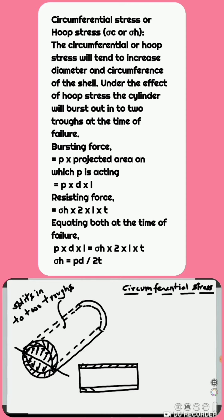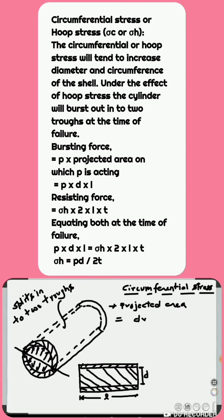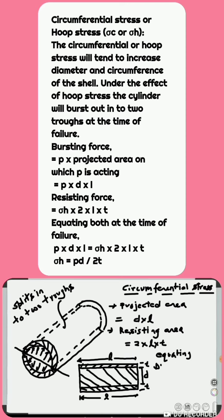Bursting force equals P into D into L, where the projected area of the trough is a rectangle of length L and breadth D. Resisting force equals hoop stress into the area of the resistance section: Sigma H into 2 times L into T, where the area of the resistance section is length L into thickness T, and 2 is multiplied for both sides of the resisting areas. Equating both forces at the time of failure: P into D into L equals Sigma H into 2 times L into T, giving Sigma H equals P into D upon 2 into T.